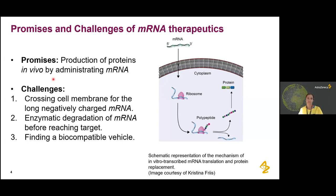However, mRNA is a very long, negatively charged polyelectrolyte. That means it's not easy to deliver because it needs to cross an equally negatively charged cell membrane to enter the cytoplasm and produce this protein. That's not an easy task. Additionally, our body is made to destroy foreign mRNA, so we need to protect it from enzymatic degradation before it reaches the target cell.